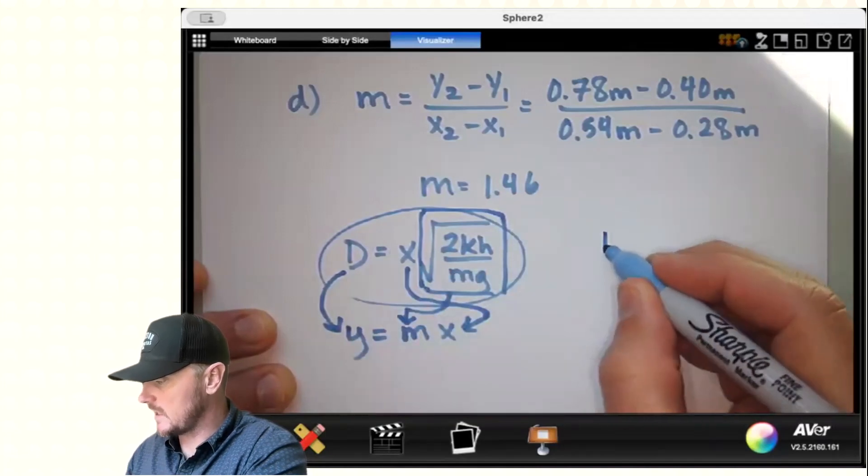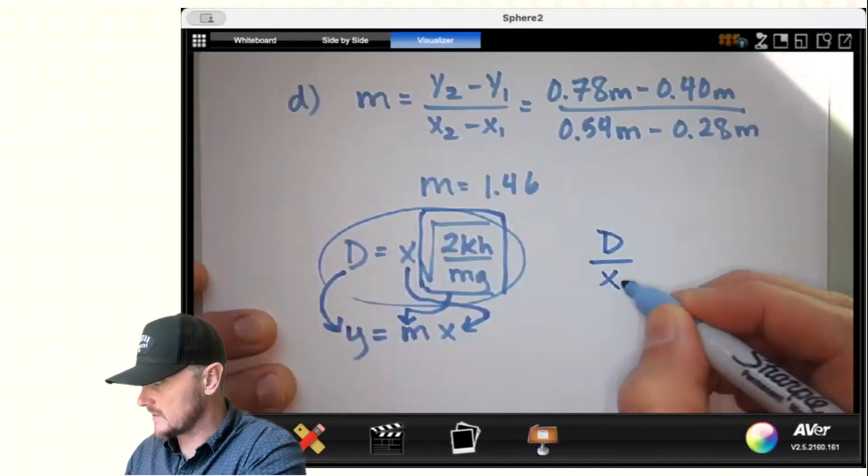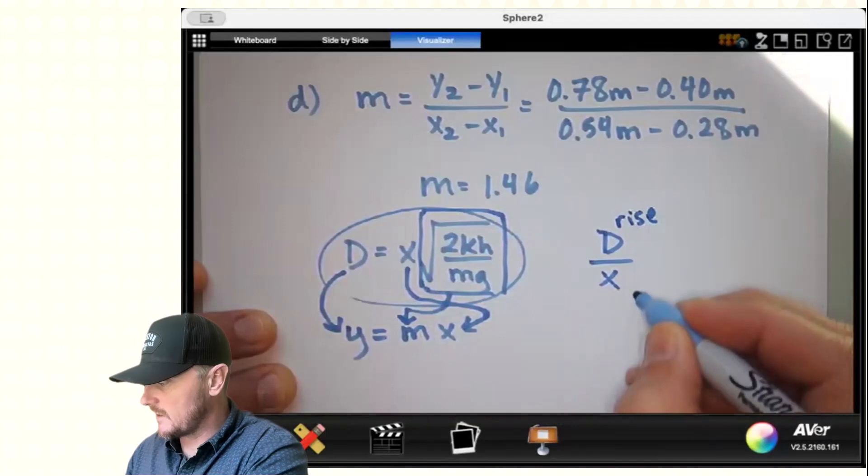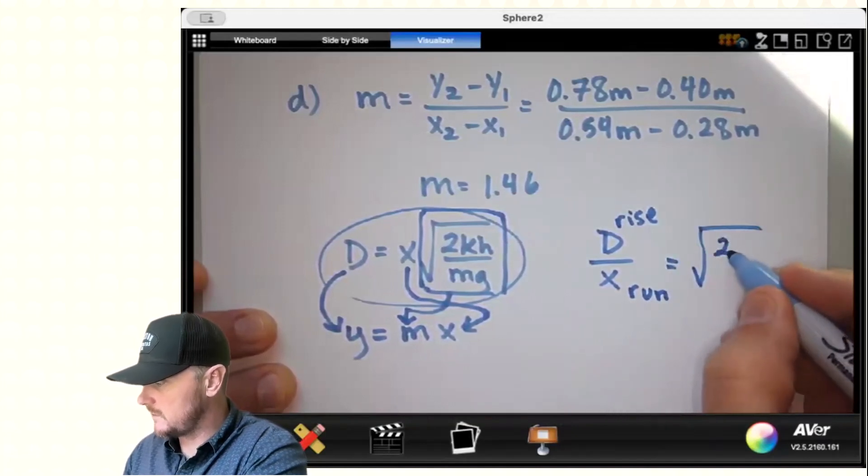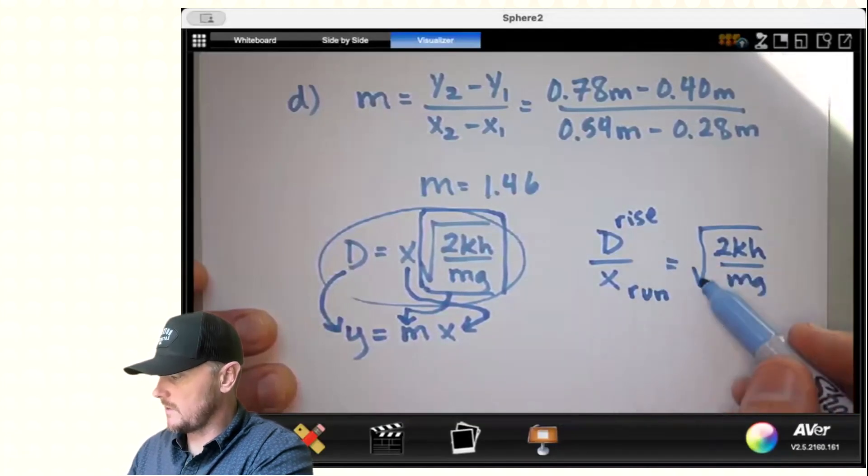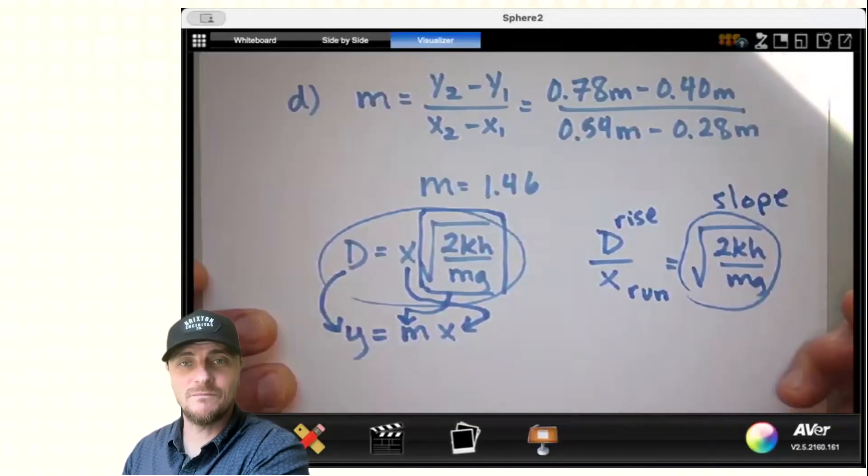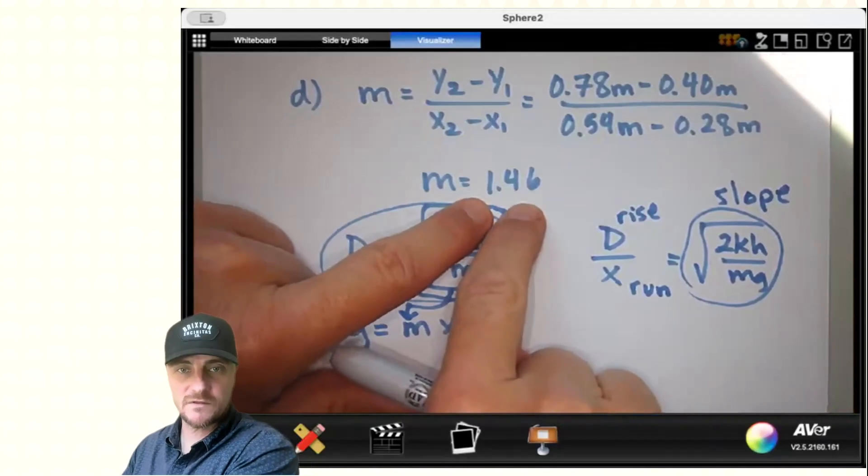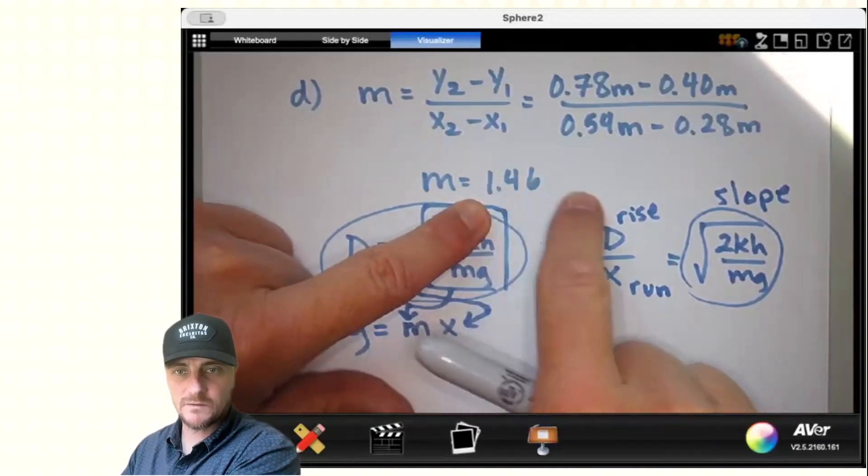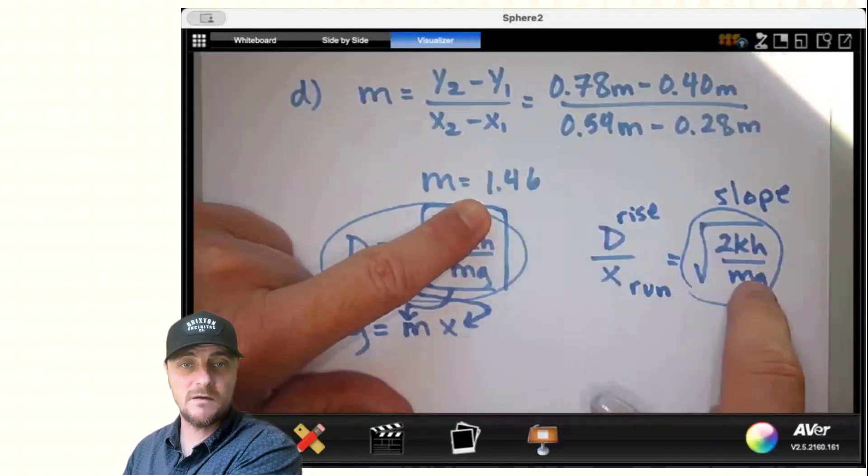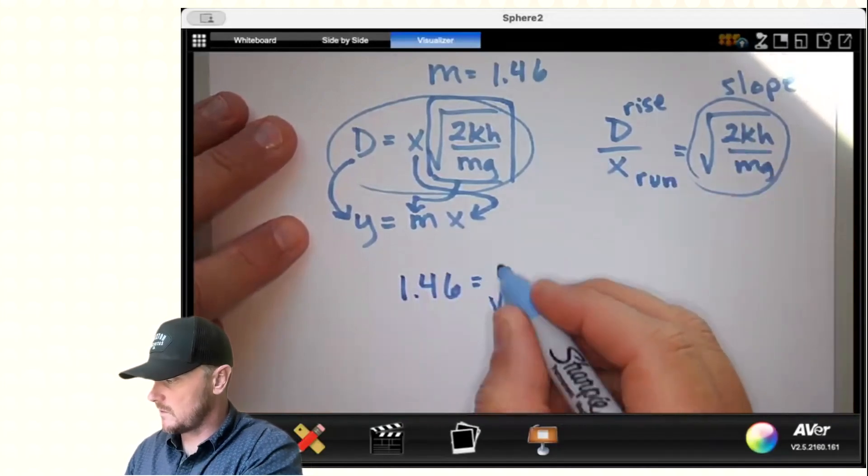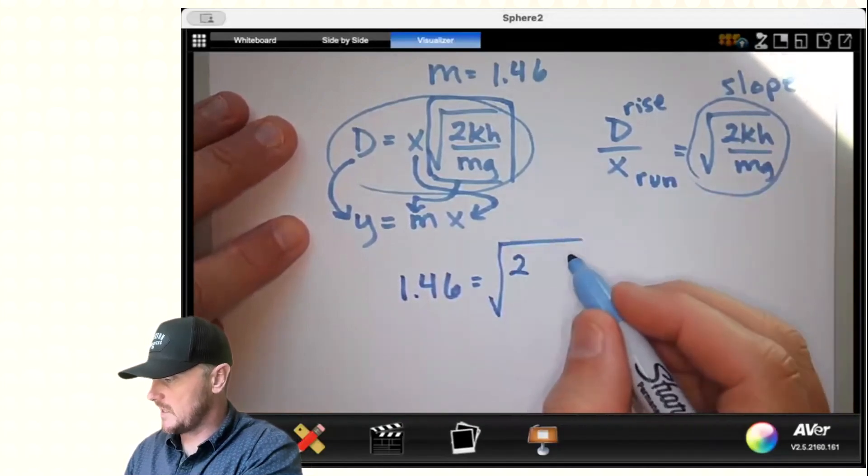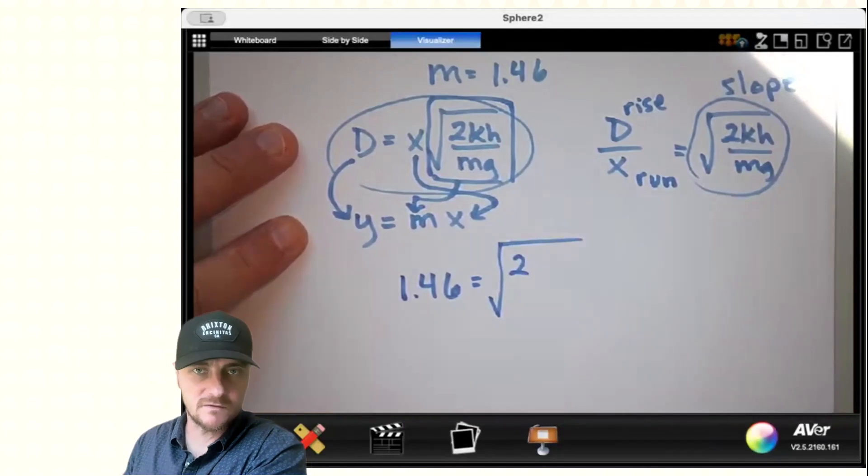If I rearrange this equation, I could say D divided by x, that is my rise, divided by my run, would be equal to square root of 2kH over mg. And once again you can see, oh yeah, rise over run, that is the slope. So this was our answer for slope. I'm going to set this equal to this expression right here. So I'll have 1.46 equal to the square root of 2 times kH over mg.